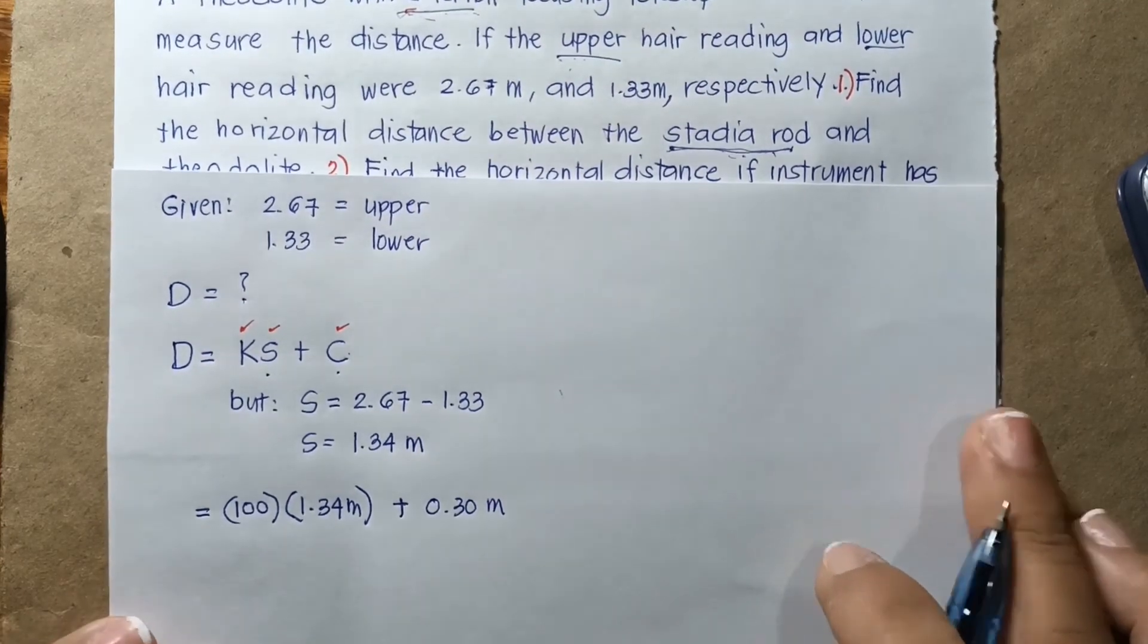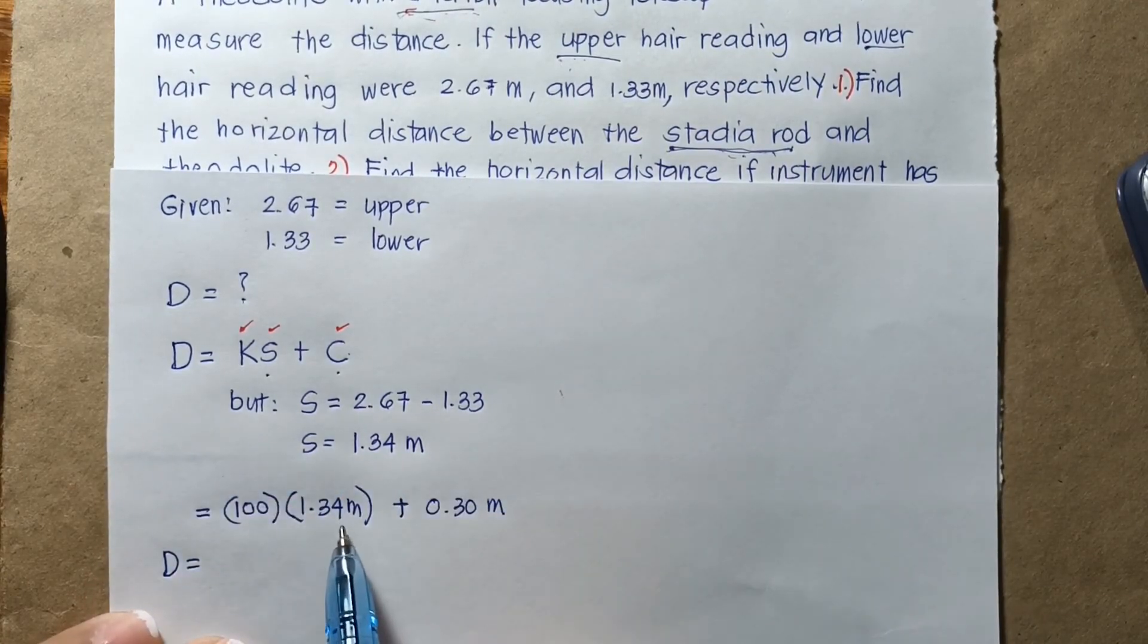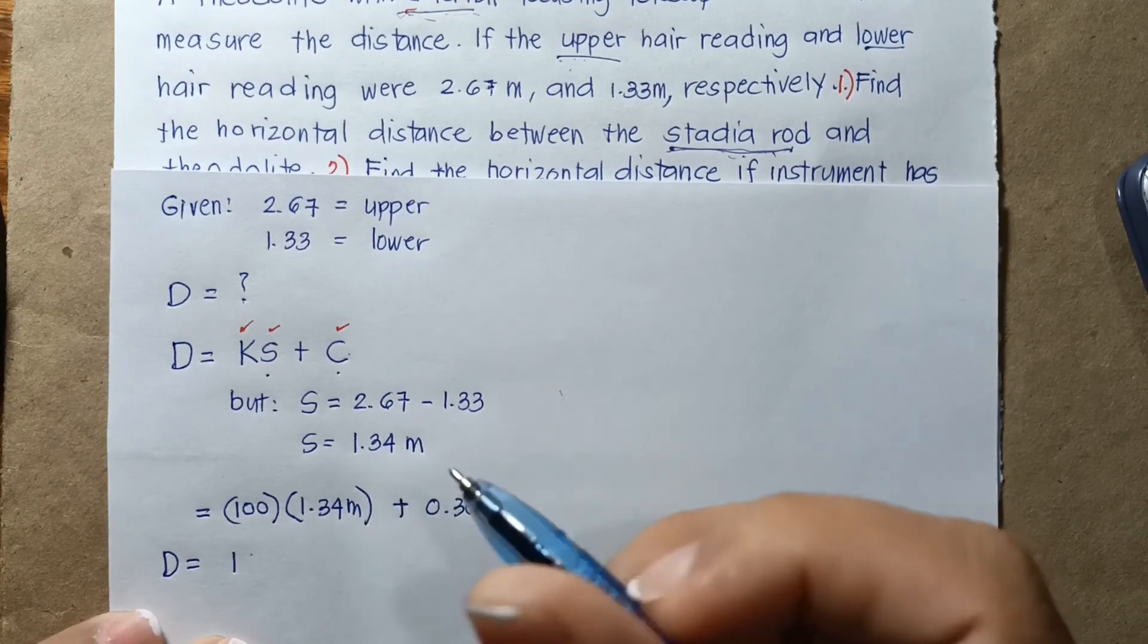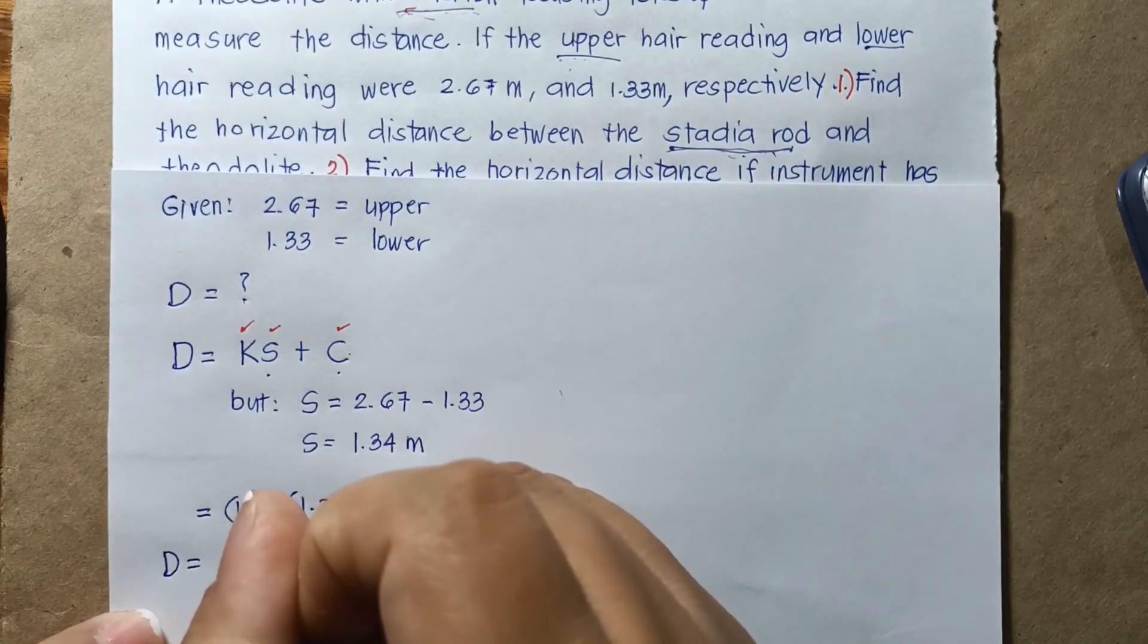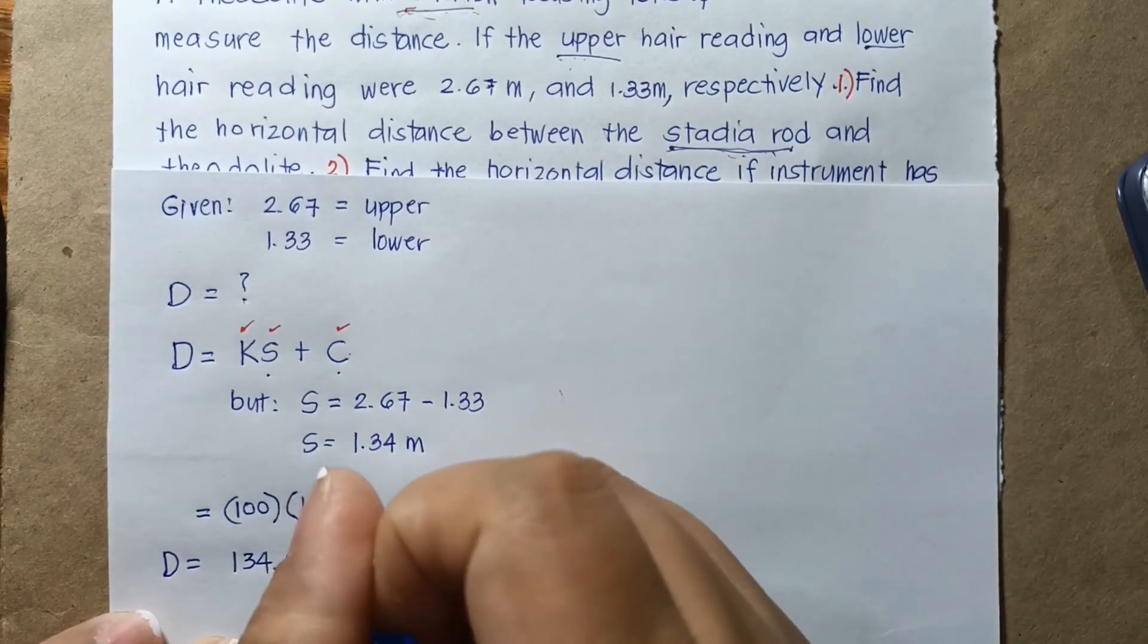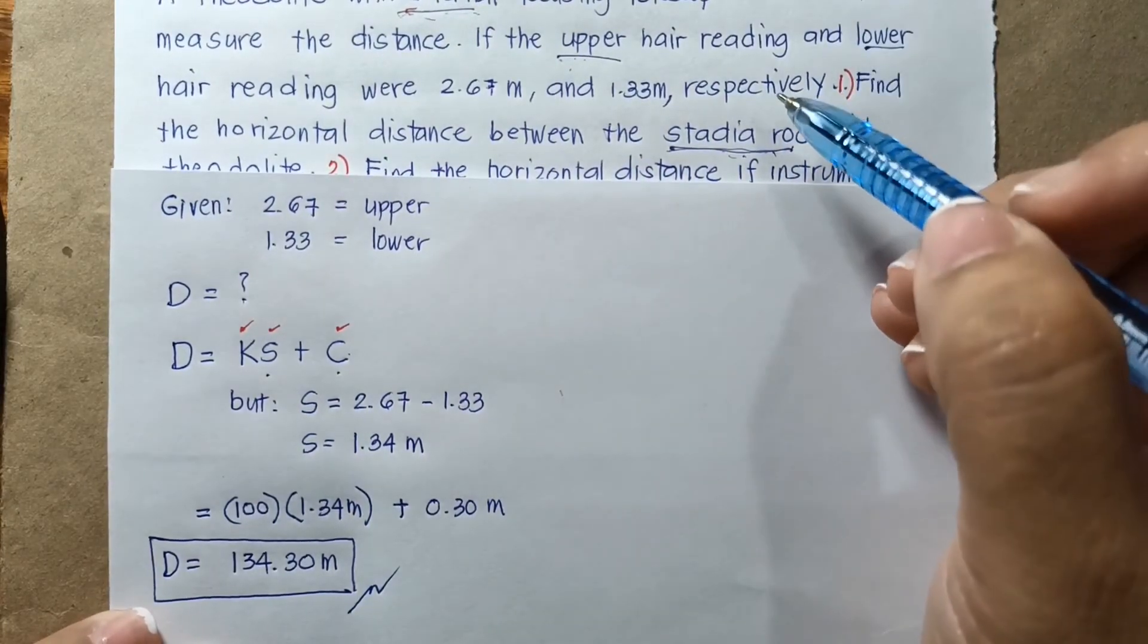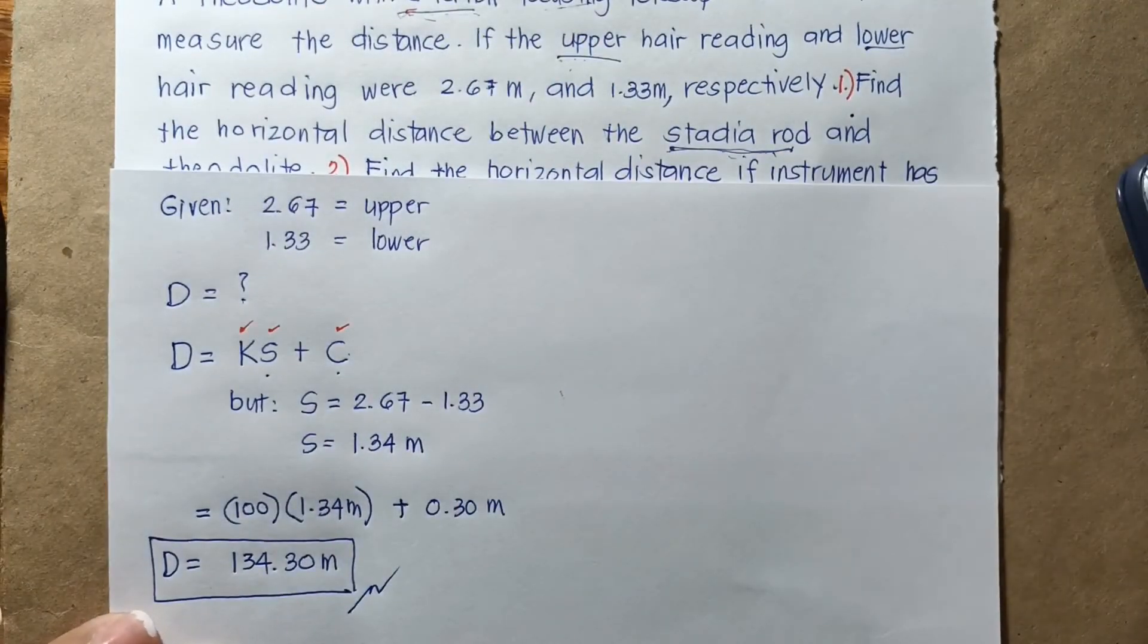So finally, it will give you a value of D equals, that is 134 plus 0.3, then that is 134.3 meters. So that is the final answer for this problem number one, which is the horizontal distance between the stadia rod and theodolite using the external focusing telescope.